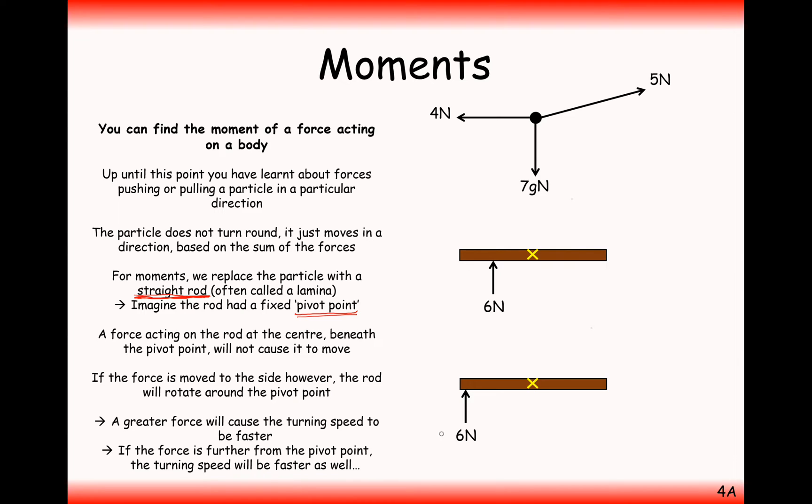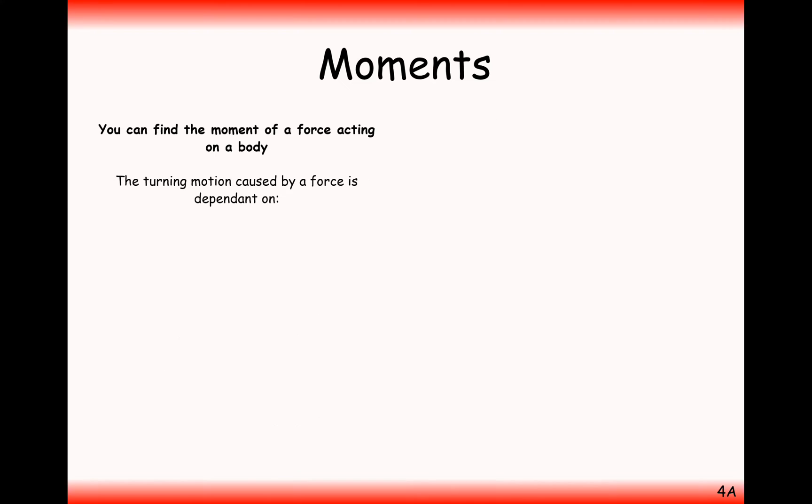When we work out the spinniness of an object, we're effectively working out the moment of that spin around a pivot point. If it's in equilibrium, then there's going to be no spinning, the forces maybe on each side will balance each other out. And the way that we calculate the value of a moment involves two components. You've seen here that the distance is affecting the moment, and also the value of the force will affect the moment as well.